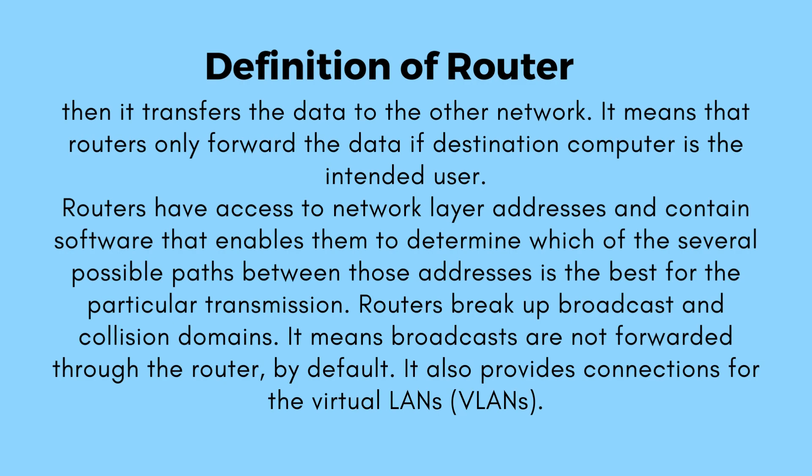If the destination computer is the intended user, routers have access to network layer addresses and contain software that enables them to determine which of the several possible paths between those addresses is best for the particular transmission. Routers break up broadcast and collision domains, meaning broadcasts are not forwarded through the router by default. It also provides connections for virtual LANs.